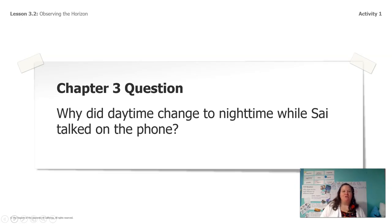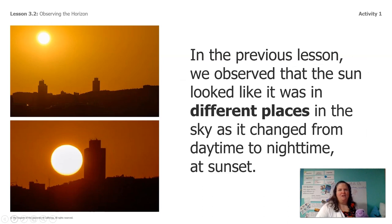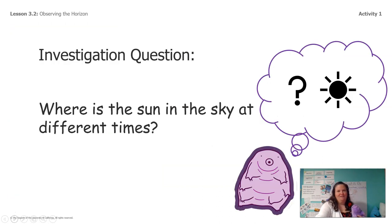Let me remind you of our chapter three question: Why did daytime change to nighttime while Sai talked on the phone? So that's our chapter three question, and that's what we're trying to answer. In the last lesson, we observed that the sun looked like it was in different places. We saw a little video, and it looked like the sun was in different places as it changed from daytime to nighttime during sunset. So what we want to know now is where is the sun in the sky at different times?